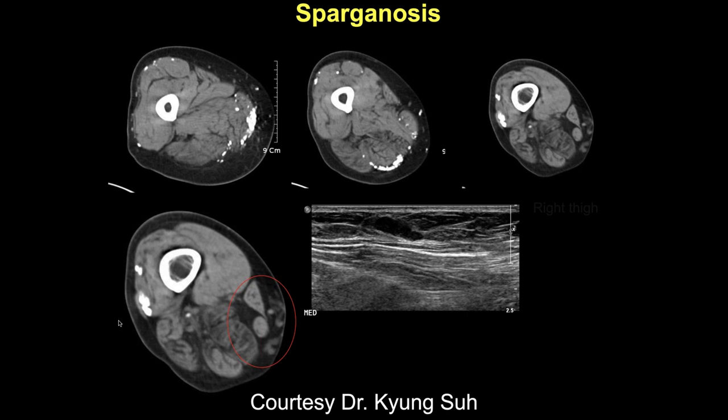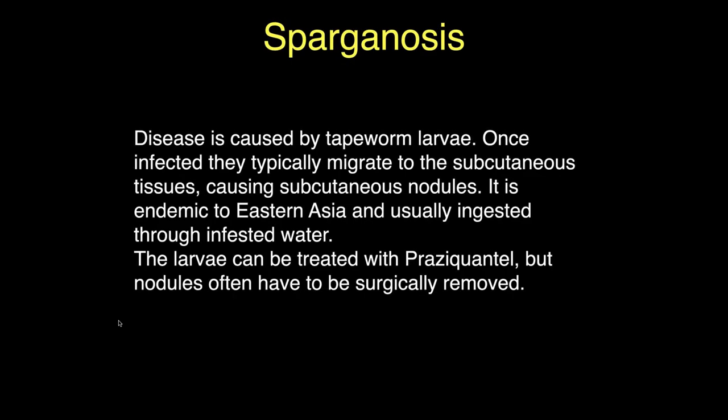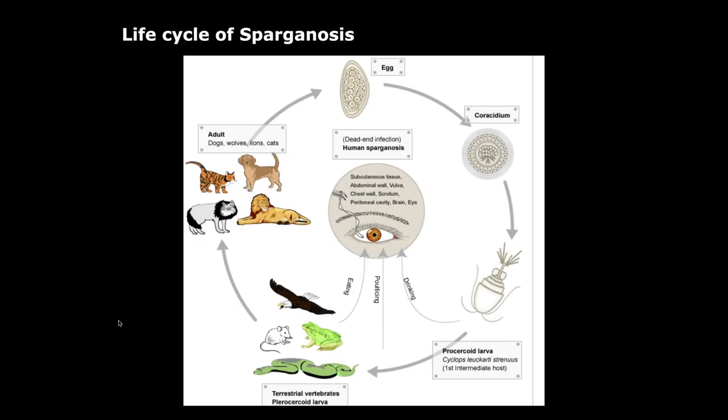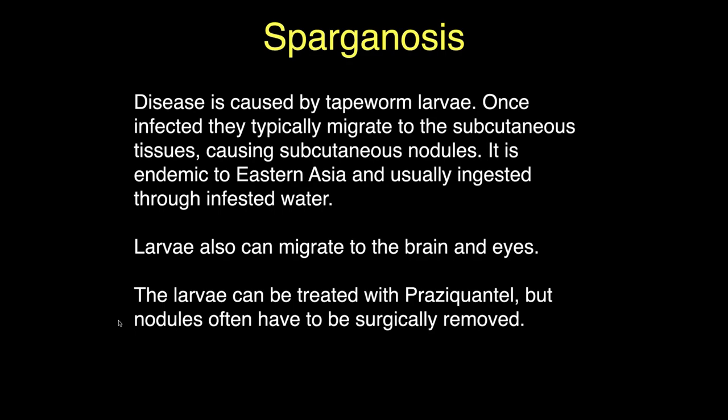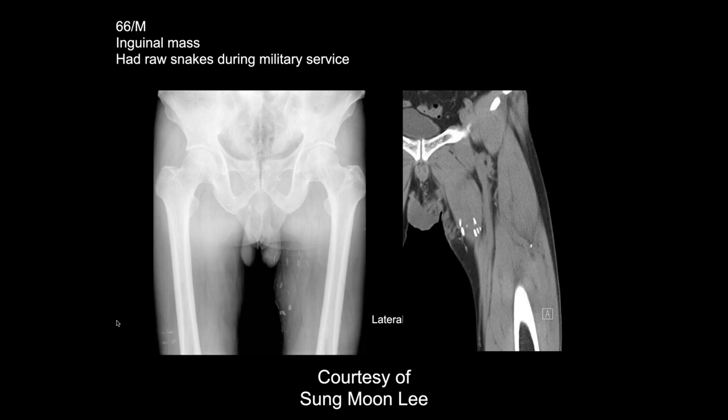This is sparganosis. The speaker recalls treating a family who contracted the disease from undercooked pork sausage — every member except the mother who did the cooking was affected, presumably because she sampled the food while it was still cooking.